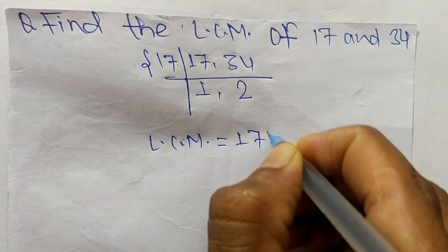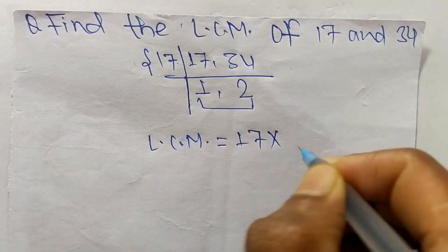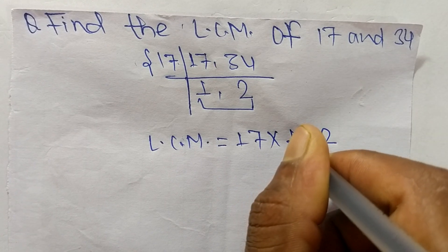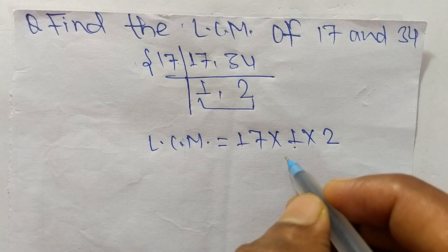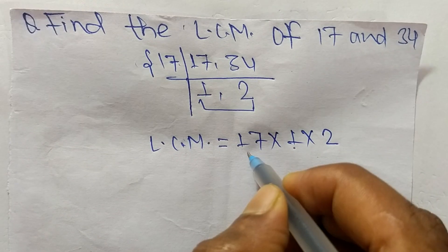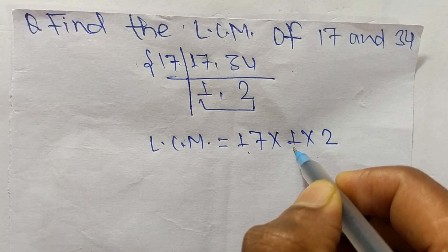from this part it is 17, and from this part it is 1 and 2. We neglect 1 because multiplying any number with 1 we get the same result. So 17 times 1 means it is 17 times 2 means it is 34.